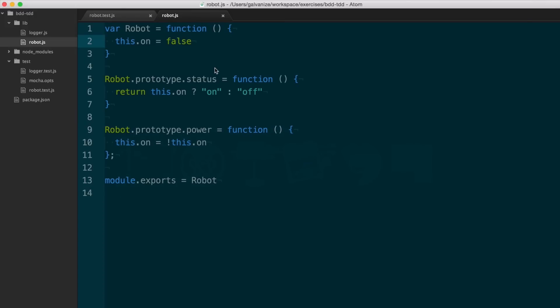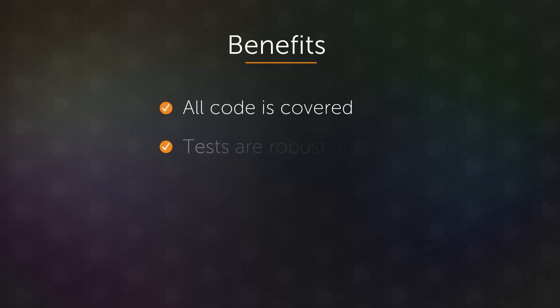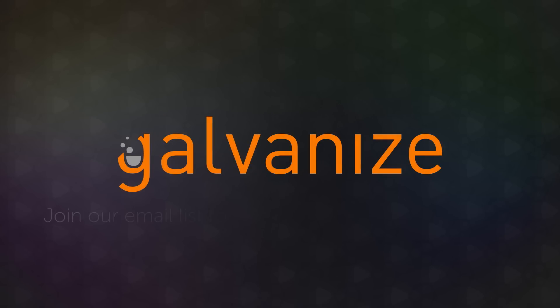The two guidelines I was following were: only write code in response to a failing test, and only write the simplest code to make that test pass. The benefits of following this rigorous TDD red-green-refactor method is that your code has very high coverage, and more importantly, your tests are robust and complete. It's fairly easy to get good code coverage even if you write tests after the fact, but it's not as easy to ensure your test suite itself is robust and complete. Following those two guidelines ensures both. And that was red-green refactor.